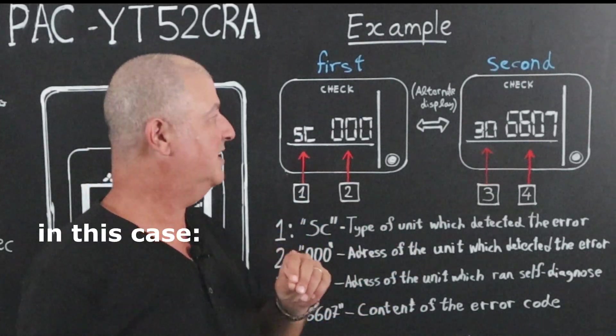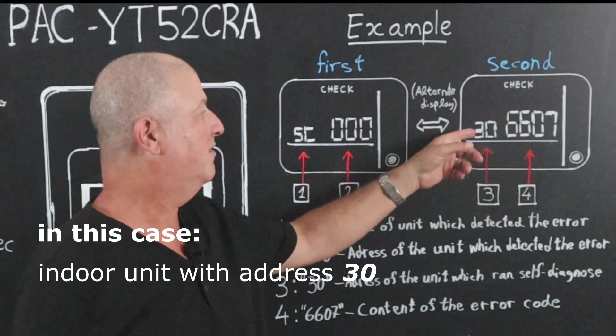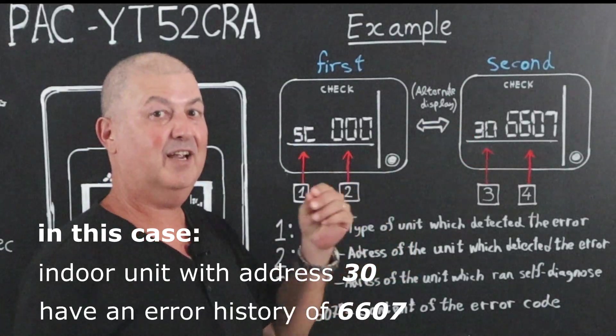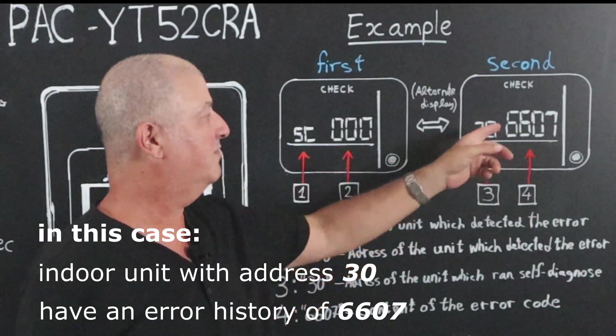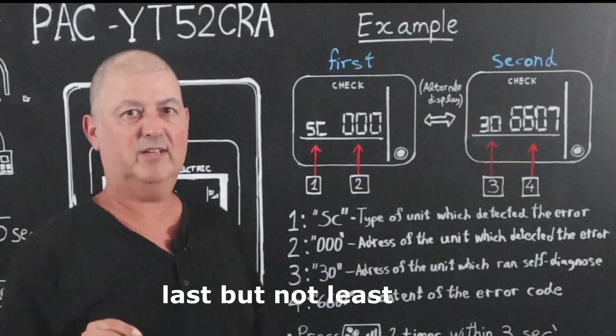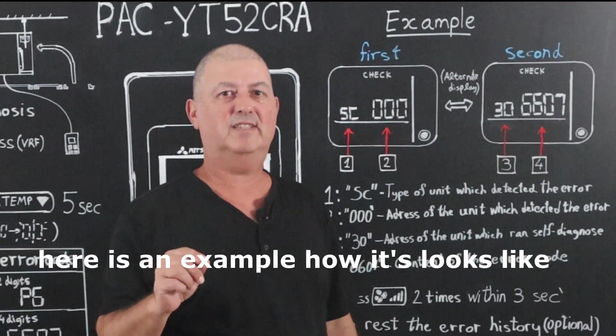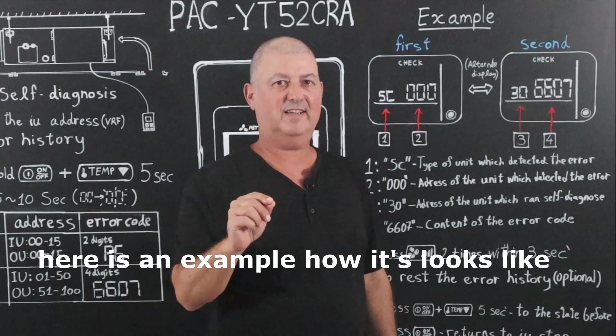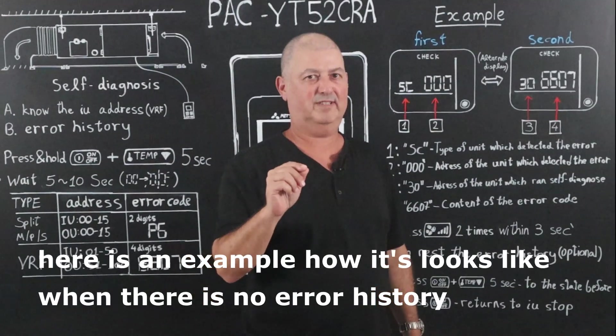In this specific case, indoor unit with address 30 has an error history of 6607. Last but not least, here is an example of how it looks like when there is no error history.